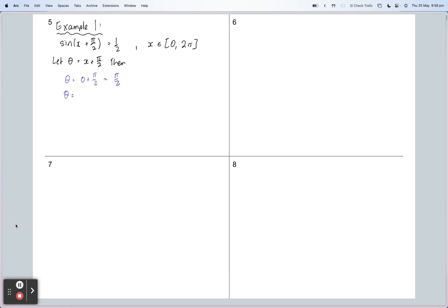For the right boundary, we have 2π. So we substitute 2π for x, and I get 2π plus π/2. A quick bit of mathematical gymnastics: 2π/2 is 4π/2, plus π/2 is 5π/2. So then we have sine of theta equals a half for theta belonging to π/2 to 5π/2, the new upper boundary.